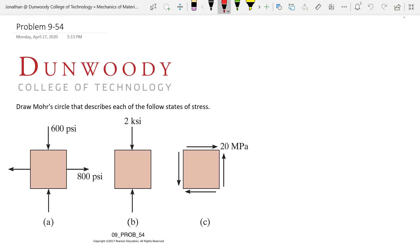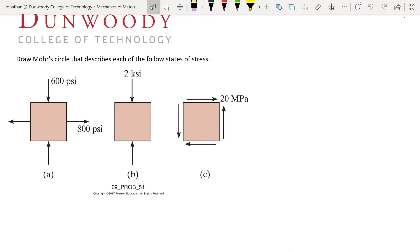We're asked to draw a Mohr's circle for each of these states of stress. In A we have sigma x is positive 800 psi, sigma y is negative 600 psi, and we have no shear. In B we have a compressive sigma y of 2 ksi, no sigma x, no shear. And in C we have only shear of 20 MPa, and that's positive.